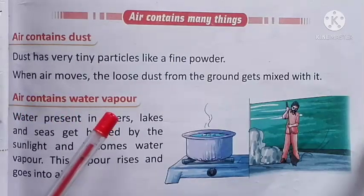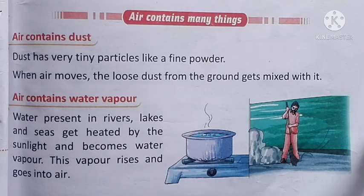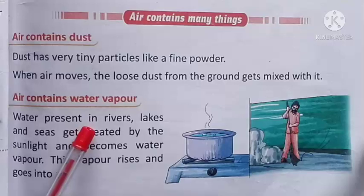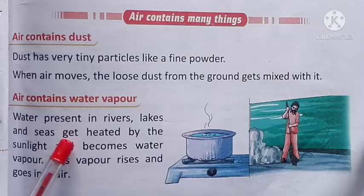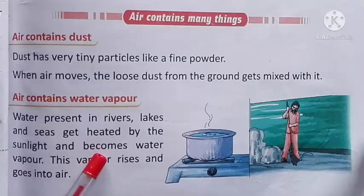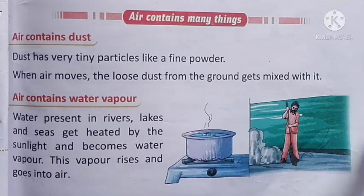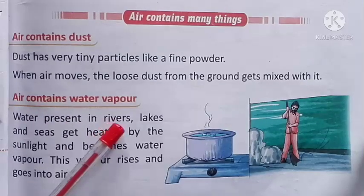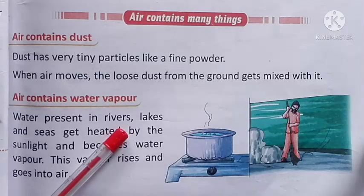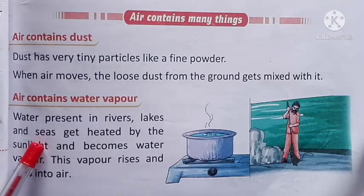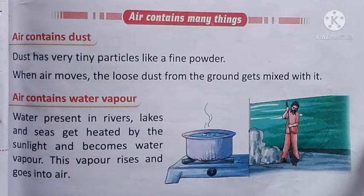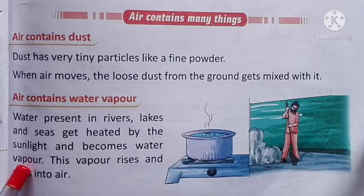Another one is — air contains water vapor. यानि वायु में जलवाष्प होता है। Water present in rivers, lakes and seas gets heated by the sunlight and becomes water vapor. नदियों, झीलों और समुद्रों में मौजूद जल सूर्य के प्रकाश से गर्म हो जाता है और जलवाष्प बन जाता है।